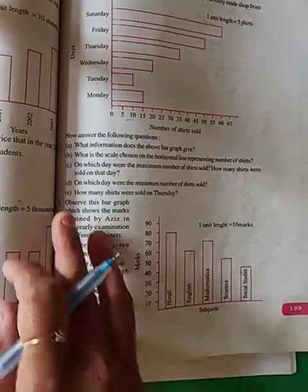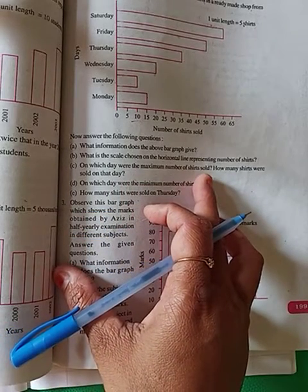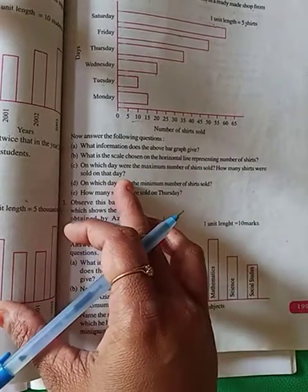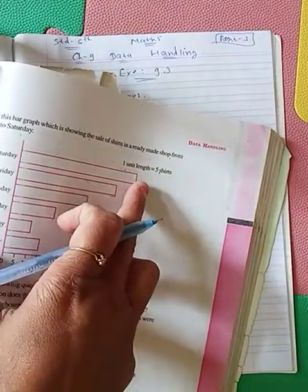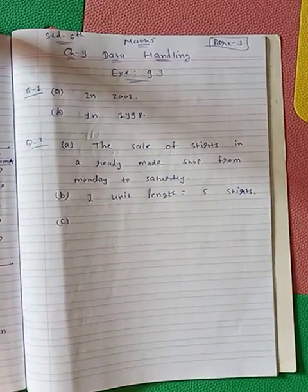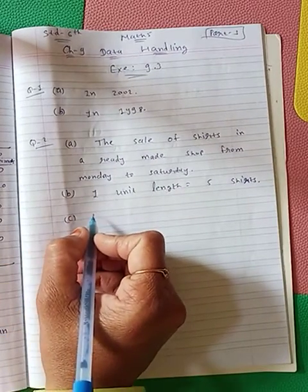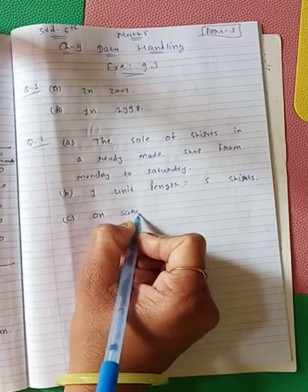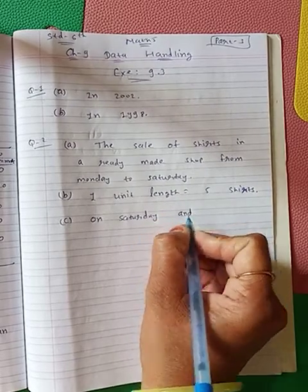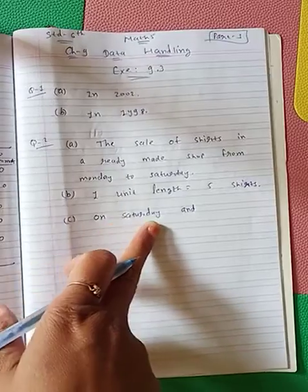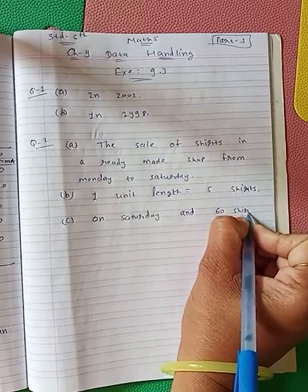Part C: on which day were the maximum number of shirts sold, and how many shirts were sold on that day? Look at the graph — Saturday has the tallest bar. As I showed you just a moment ago using the scale, Saturday had 60 shirts. So write: on Saturday, maximum number of shirts sold — 60 shirts.